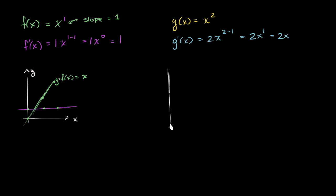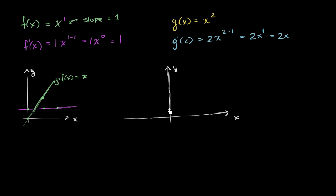So let's see if this makes reasonable sense. I'm going to try to graph this one a little bit more precisely. So this is the x-axis, y-axis. Let me mark some stuff off here — 1, 2, 3, 4, 5 on one axis, and 1, 2, 3, 4 on the other.